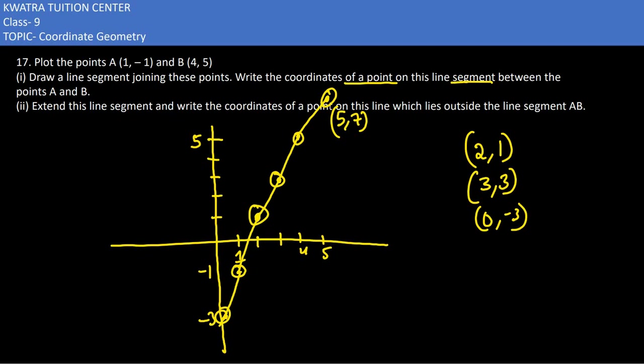(0, -3) and (5, 7) are the points which lie outside the line segment AB, and which are inside is (2, 1) and (3, 3).